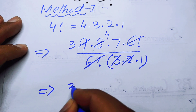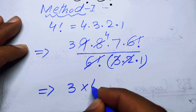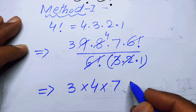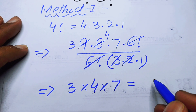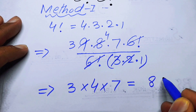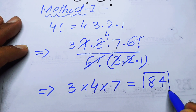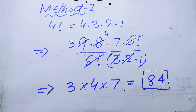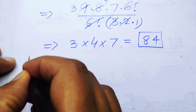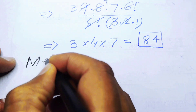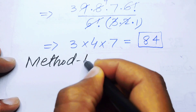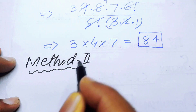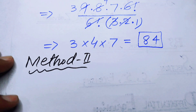After cancellation, three threes are nine and two fours are eight, so we get three multiplied by four multiplied by seven, which equals 84. This is our final answer for Method 1.